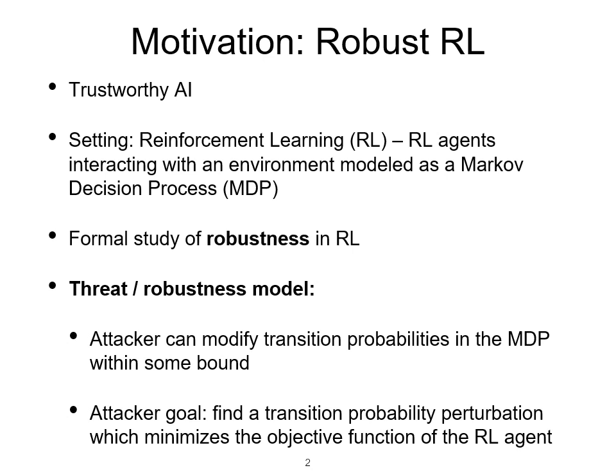Now our robustness model, which can also be seen as a threat model in the context of this workshop, is that we have some external agent, let's say an attacker, that can modify the transition probabilities in the MDP within some bound. The goal of this attacker is to find a perturbation to those transition probabilities such as to minimize or reduce the objective function of the RL agent.